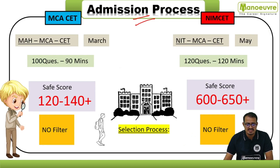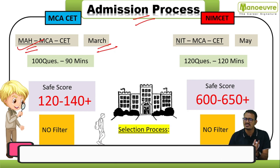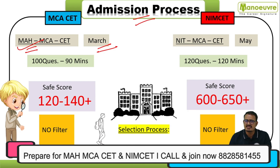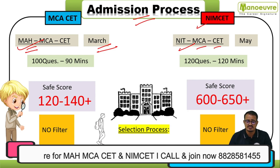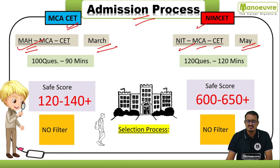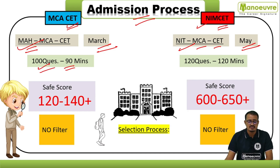For the admission process, Maharashtra MCA CET is conducted each year in the month of March — though due to the pandemic, exams were postponed, notifications will be out soon. Fill your form, prepare, and get admitted into top colleges. Similarly, NIMCET is conducted in the month of May each year. If you have already prepared for MCA CET, also try for NIMCET — the preparation overlaps. MCA CET has 100 questions for 90 minutes, while NIMCET has 120 questions for 120 minutes.